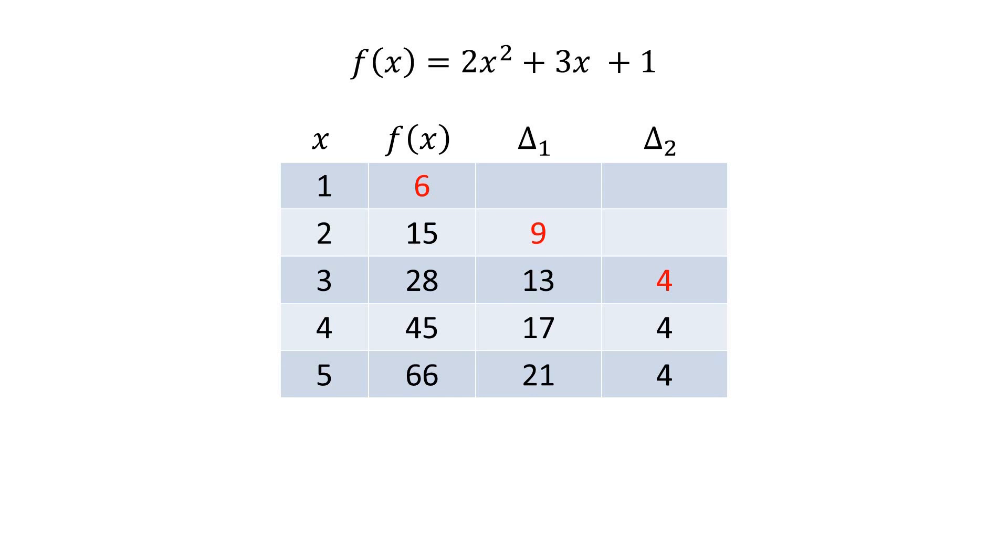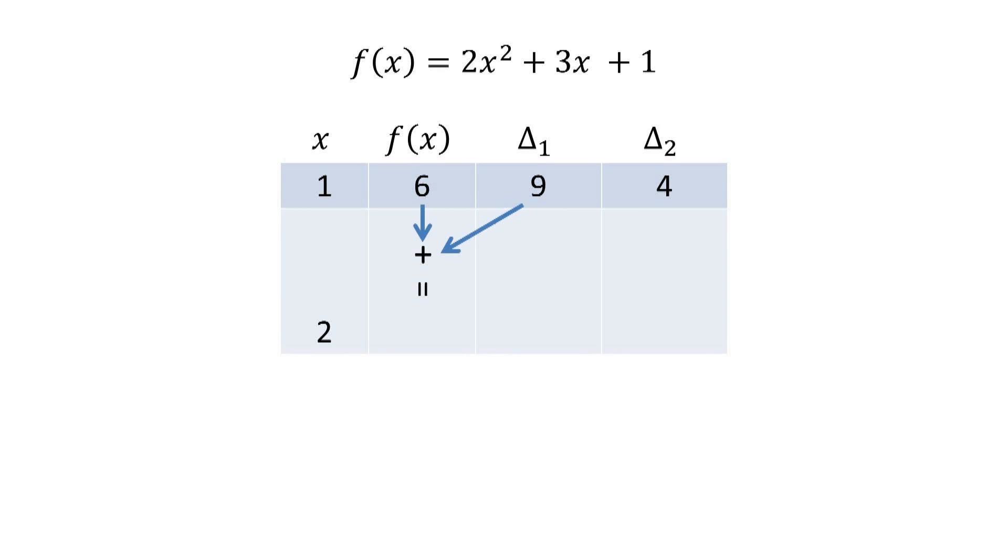We rearrange our precomputed values into a new table, like this. To fill in the second row, we add the number above each cell with the number above and to the right.